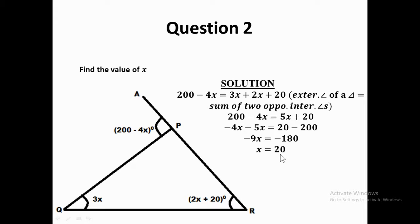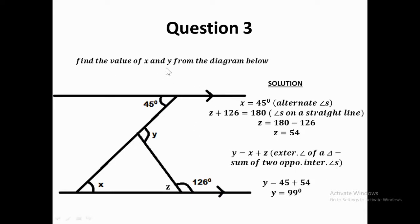The third question asks for the values of x, y, and z from the diagram. This question differs because two lines are marked with arrows, meaning they are parallel lines. A transversal crosses them. The angle of 45 degrees on the first parallel line and the angle x on the other parallel line are alternate angles, so x equals 45 degrees.